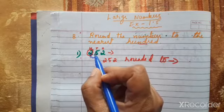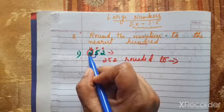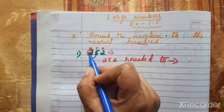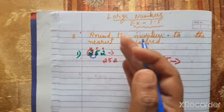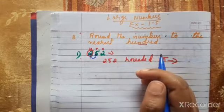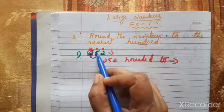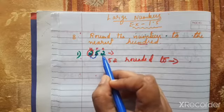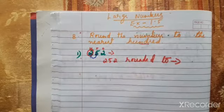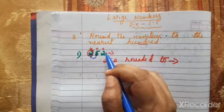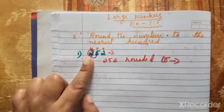Five or greater than five means this digit can give one to the rounded place. So 2 in the hundreds place becomes 3. Once door knocked, the digits after become zero. So 252 rounded to the nearest hundred is 300.